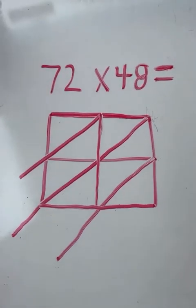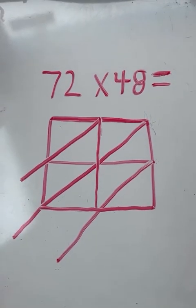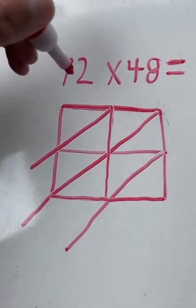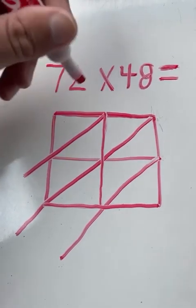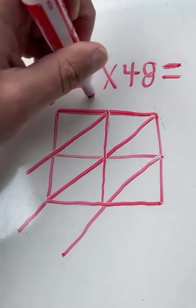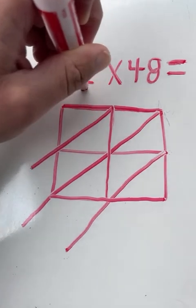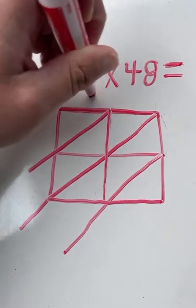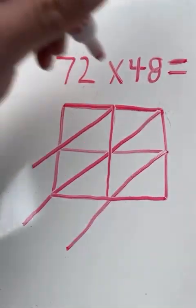So our first example problem is 72 times 48. I have my Lattice method model here, and I have a box for each digit. We have two top boxes for the numbers 72, so the digits 7 and 2.